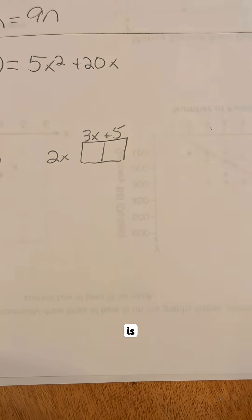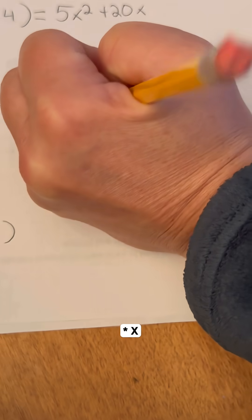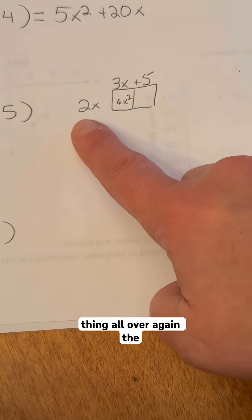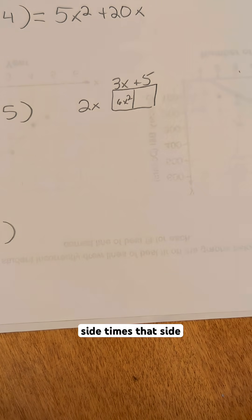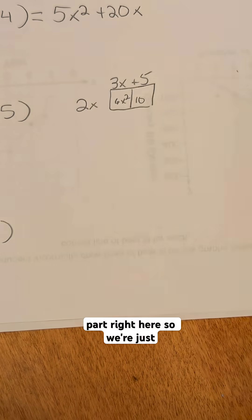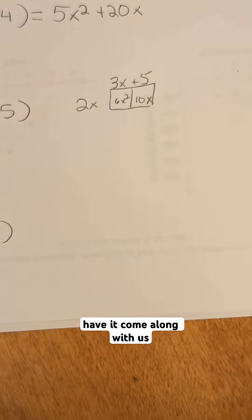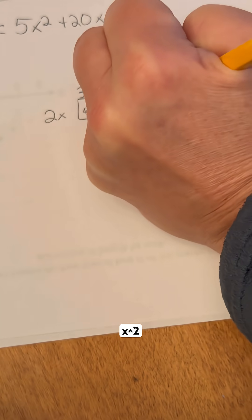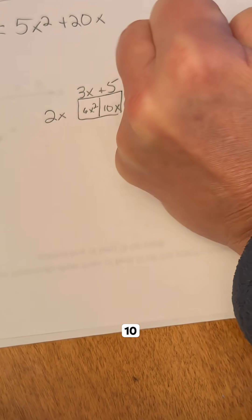Two times three is six. x times x again is x squared, and then we do the same thing all over again. This side times that side. Two times five is 10. The x is only in this part right here, so we're just going to have it come along with us. Our finalized answer here would be 6x squared plus 10x.